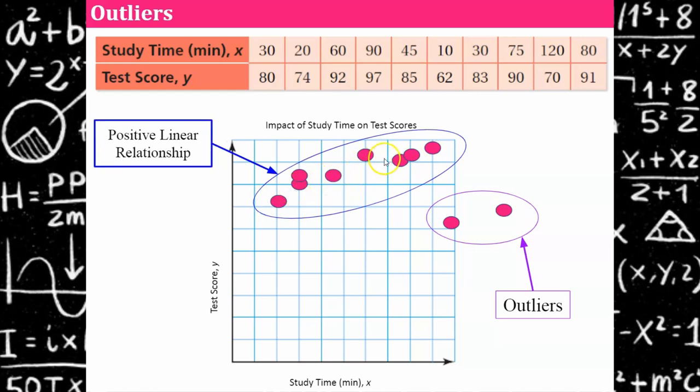These are trending in a positive linear relationship which is what you would hope to see. The more time you spent studying the higher your test score was. We can definitely say that even though we have these two outliers we're going to focus on this data and we're going to say there's a positive linear relationship.